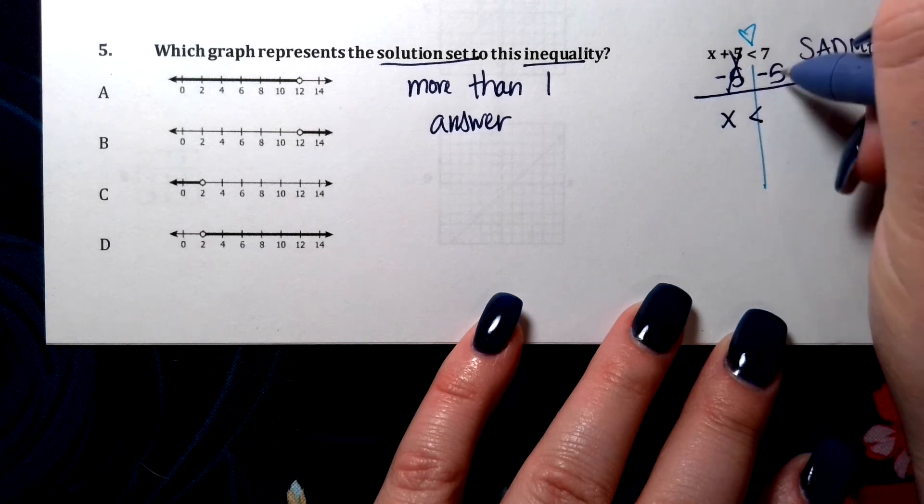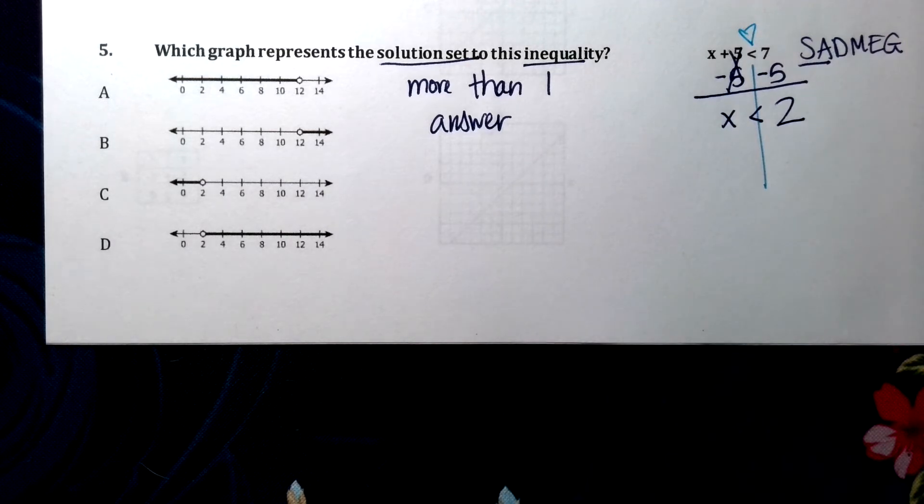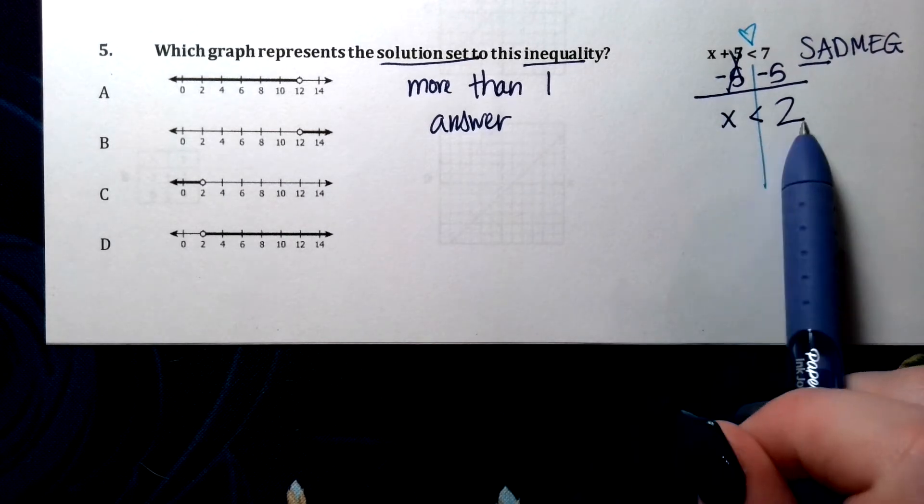x is less than, what's 7 minus 5? 2. We have x is less than 2.